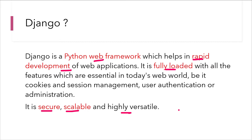The very first highlighted point says that Django is a Python web framework. You must be clear with these three words: this is something which is used for web development, the coding is done in Python, but what is a framework? That is something we need to understand.